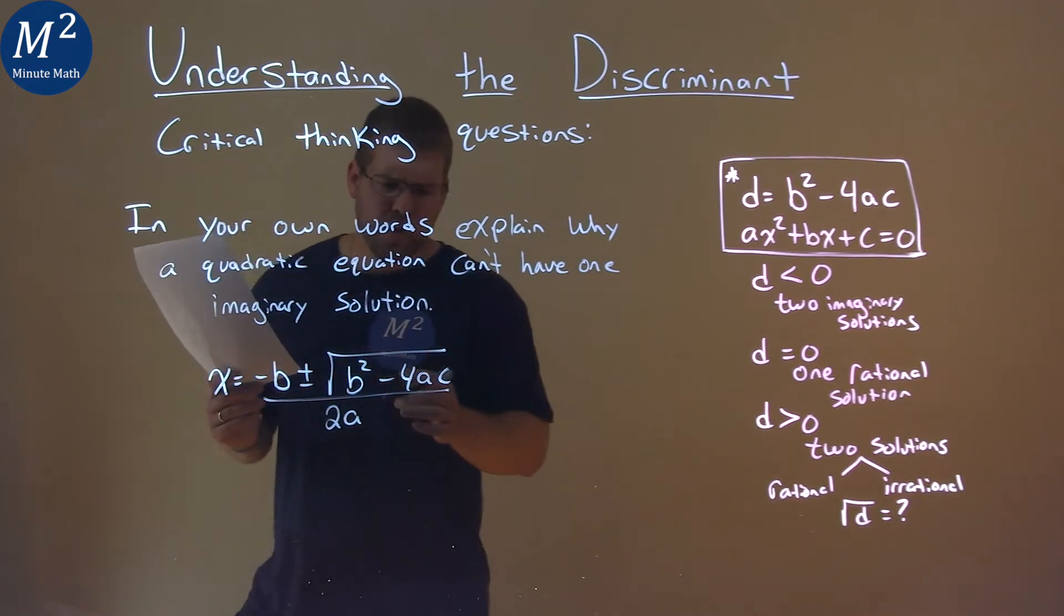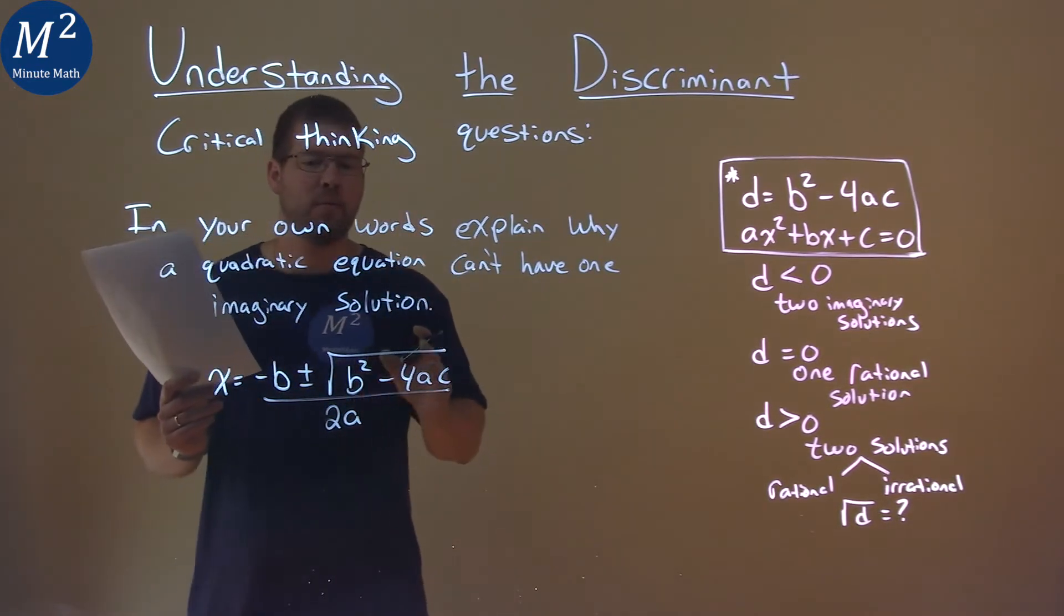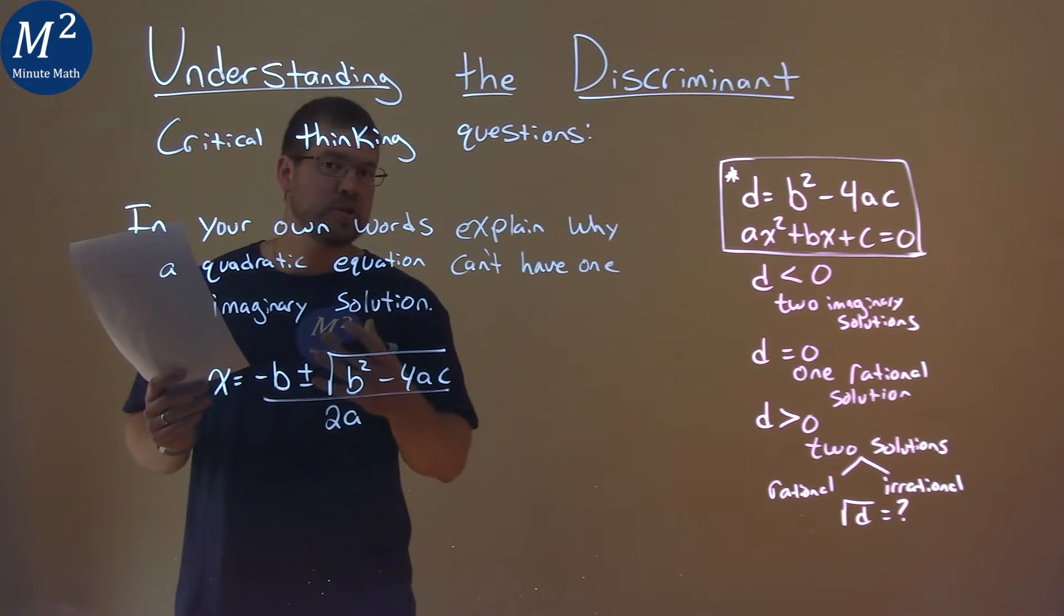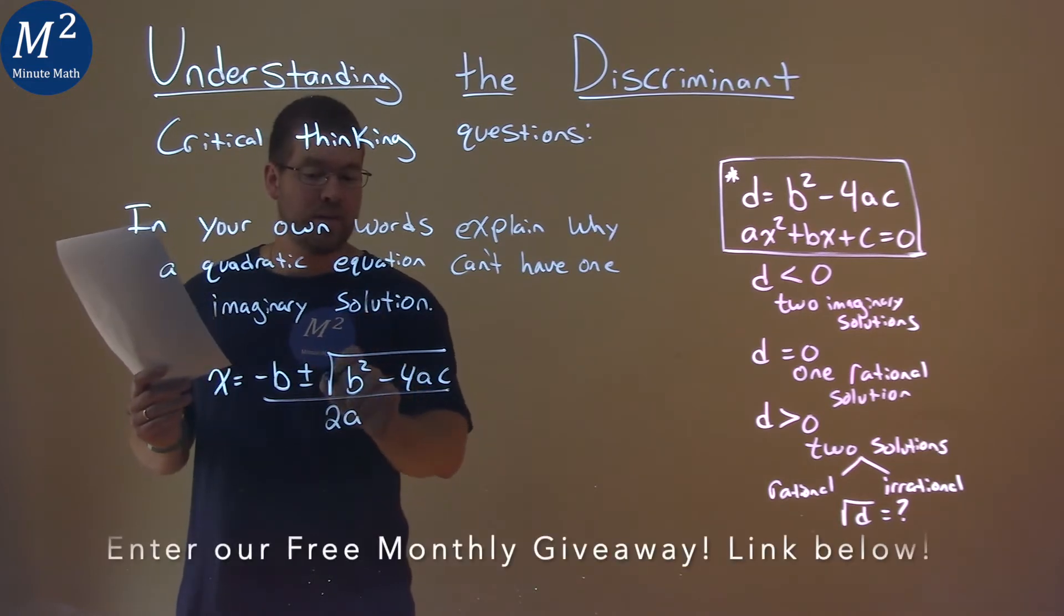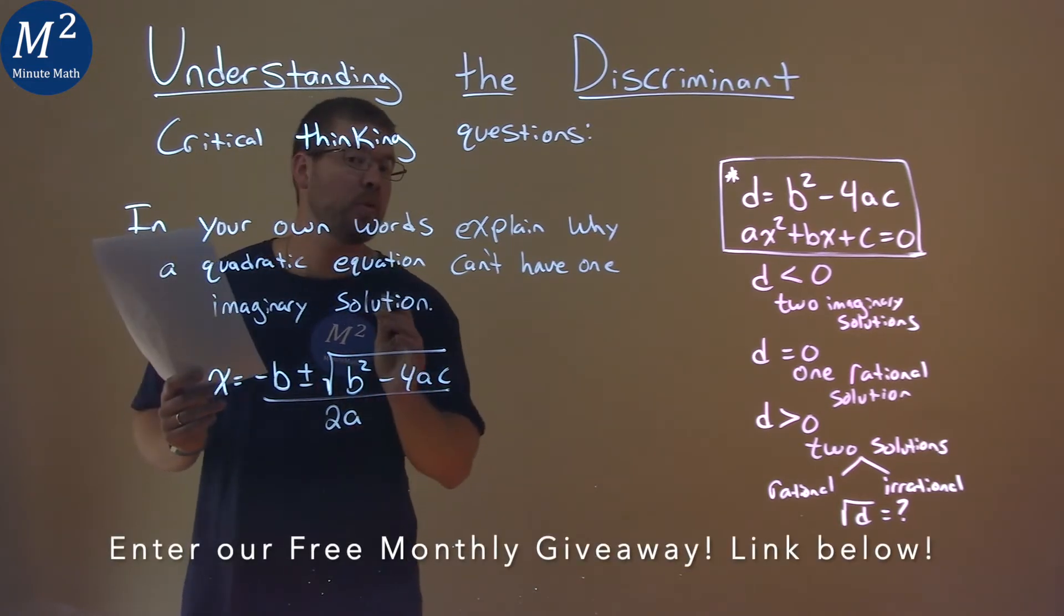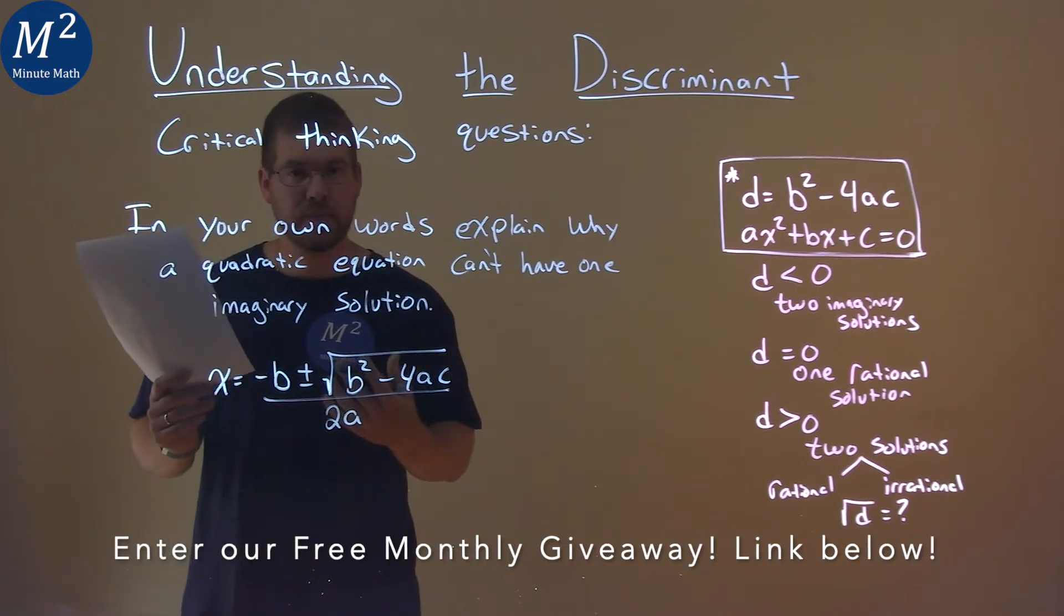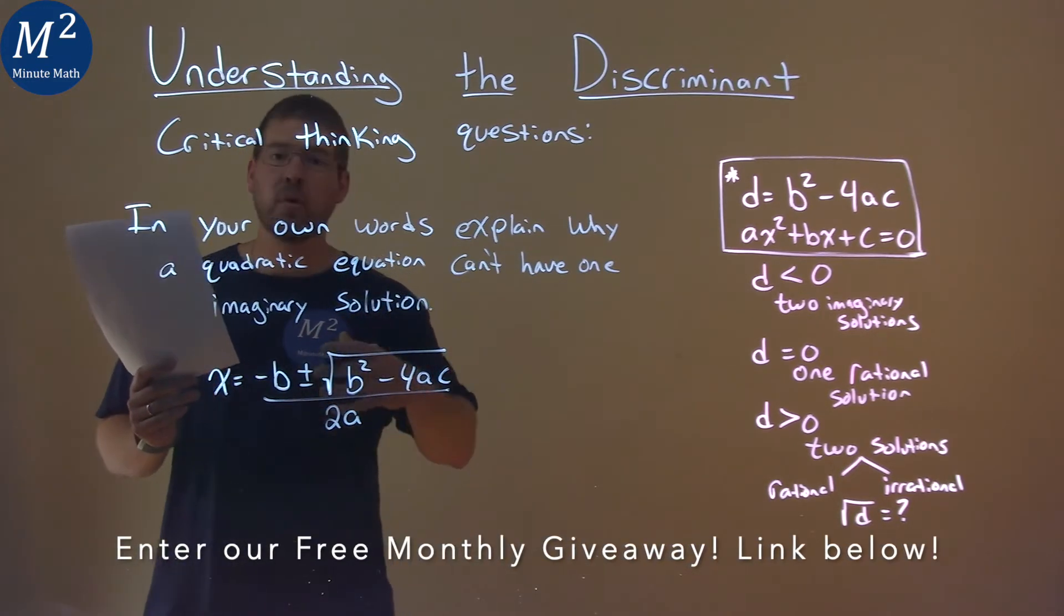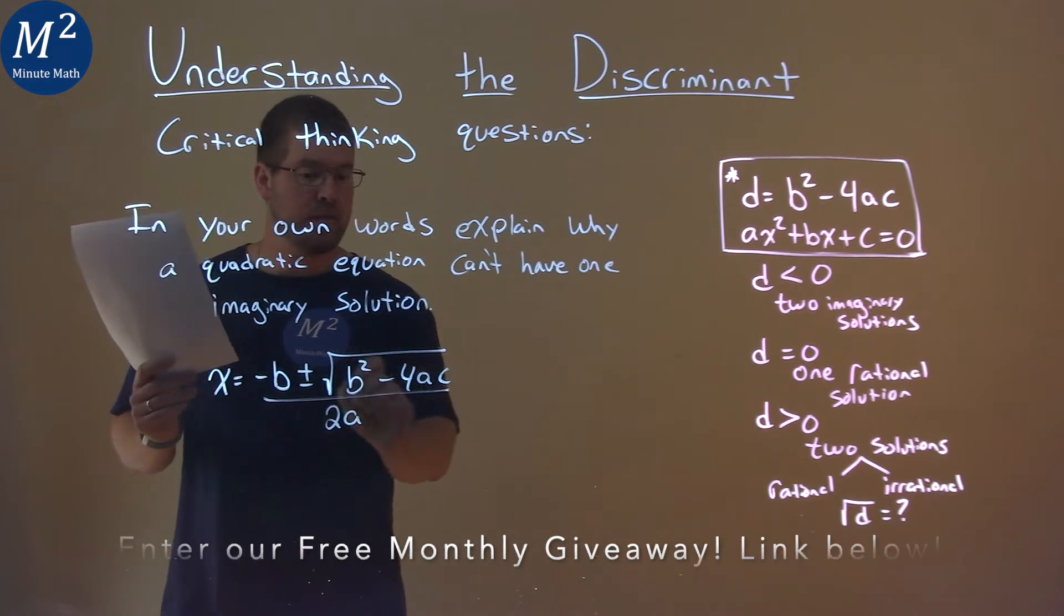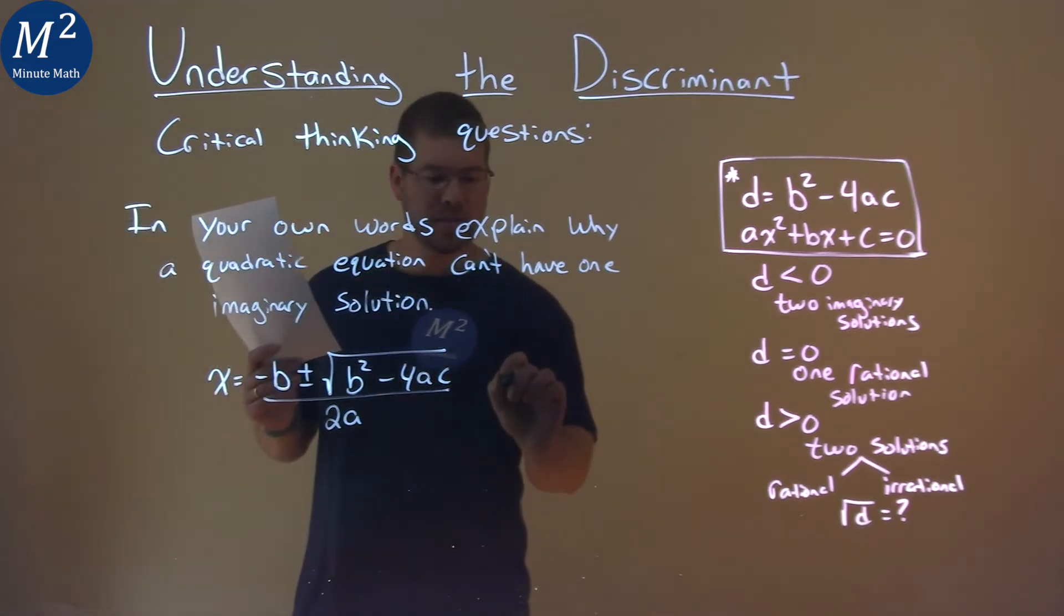Well, the reason why we can't have one imaginary solution, it always has to be two, is the imaginary solution only occurs when inside the square root is a negative number. If it's zero or a positive number, right, if it's zero here, think about when it's zero.